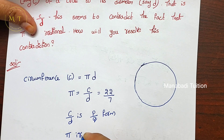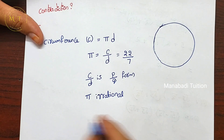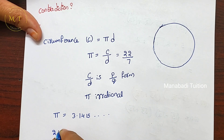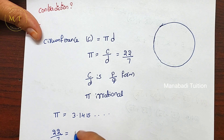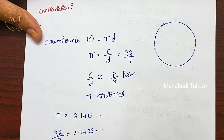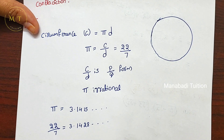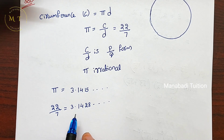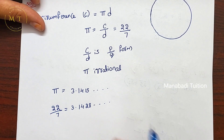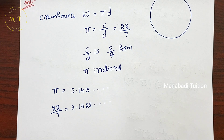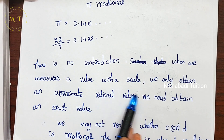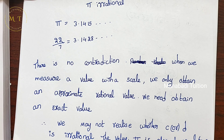Pi is irrational. Pi value is 3.1415... whereas 22 by 7, when you do normal division, gives 3.1428... So these two values are only approximately equal, not exactly equal. Pi, which is an irrational number, is not the same as 22 by 7. There is no contradiction.